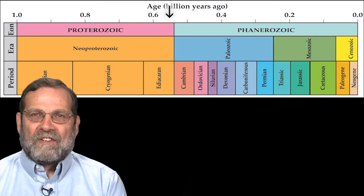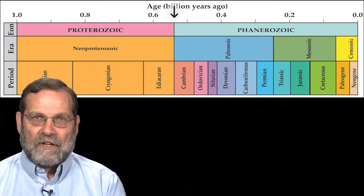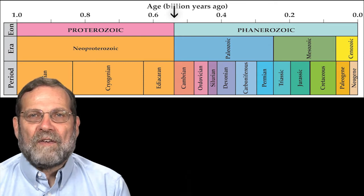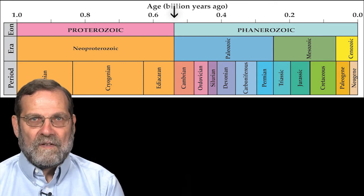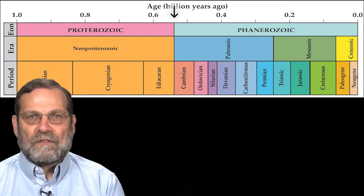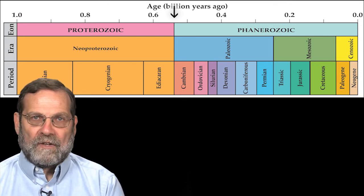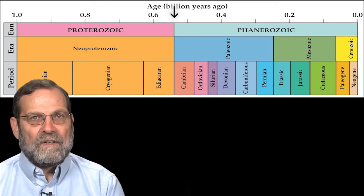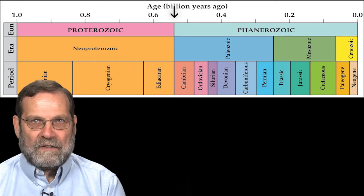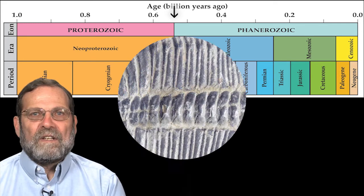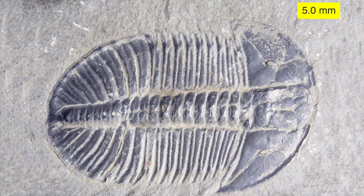A rapid expansion of biological diversity known as the Cambrian explosion became evident in the fossil record about 540 million years ago. More than 900 animal species, including representatives of all modern animal phyla, appeared. Earlier life forms may have been equally diverse, but they were soft-bodied and seldom left their mark. In contrast, Cambrian animals had shells and other hard body parts that left a stronger impression and were better preserved as fossils in the rock.